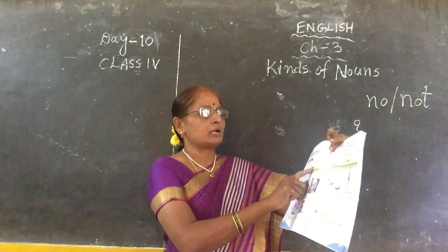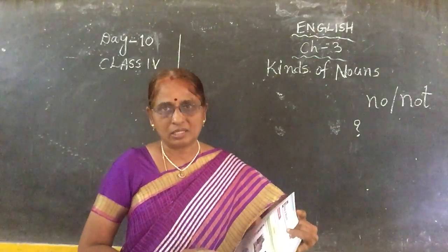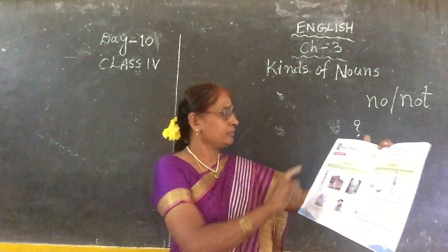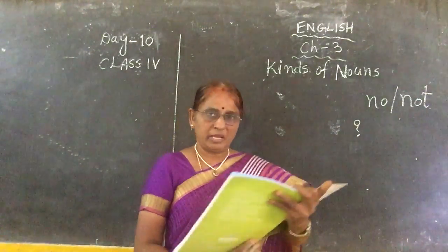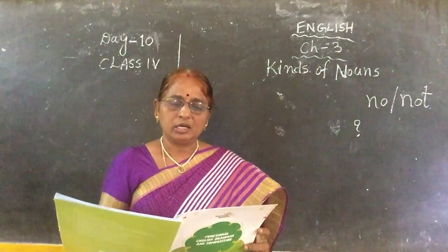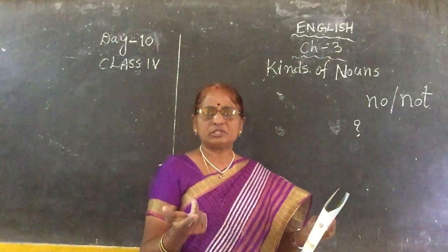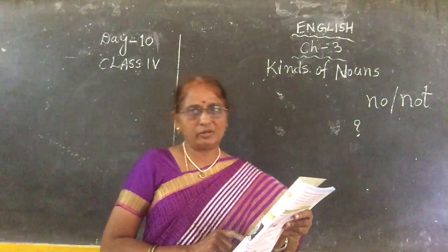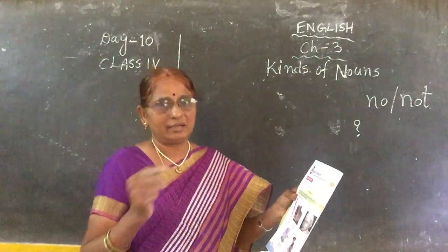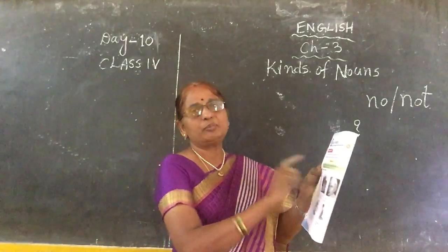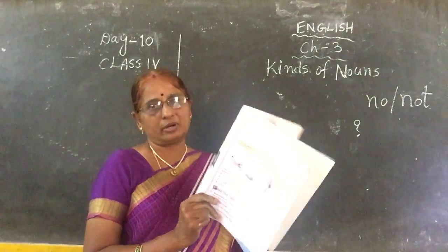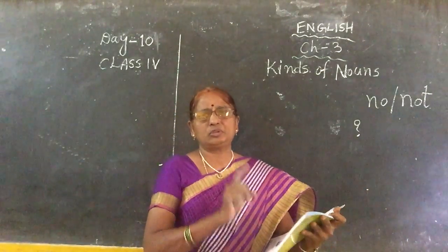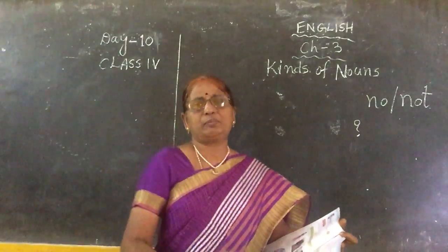Today's class is about proper noun and common noun — what is called proper noun and what is called common noun. See here, page number 18: a noun is the name of a person, place, animal or thing. Nouns can be singular or plural. You have learnt about the different kinds of nouns already; we just have to recollect them. Heading: proper nouns. What is called a proper noun? Nouns that are referring to a particular name — particular persons or particular places.